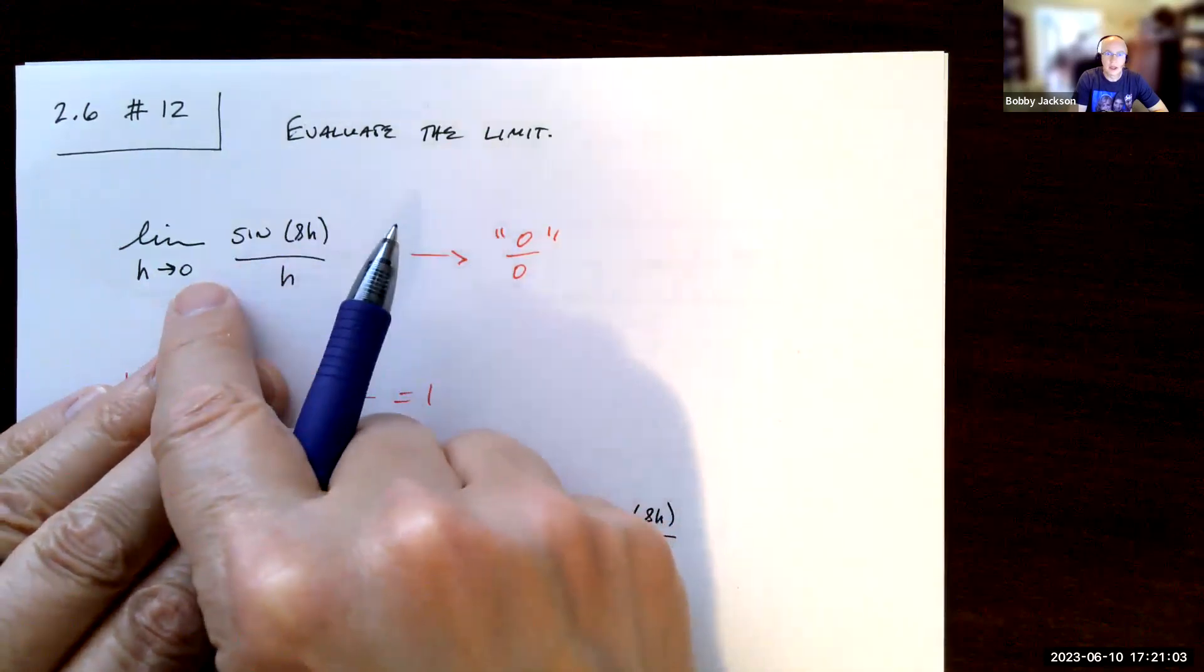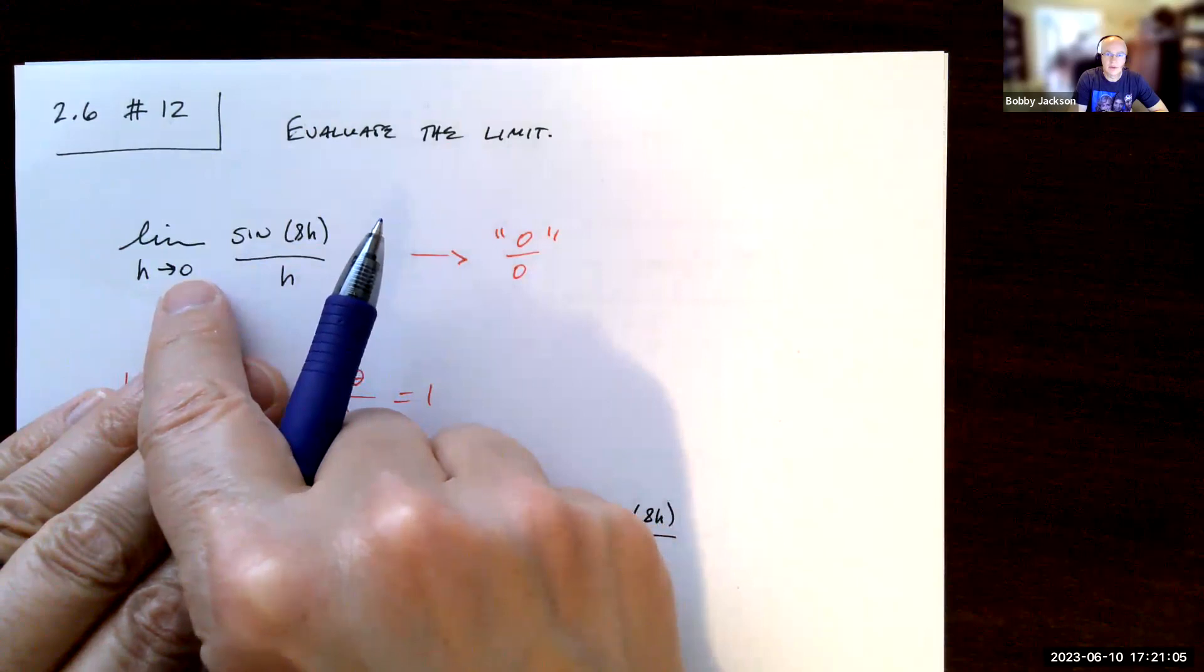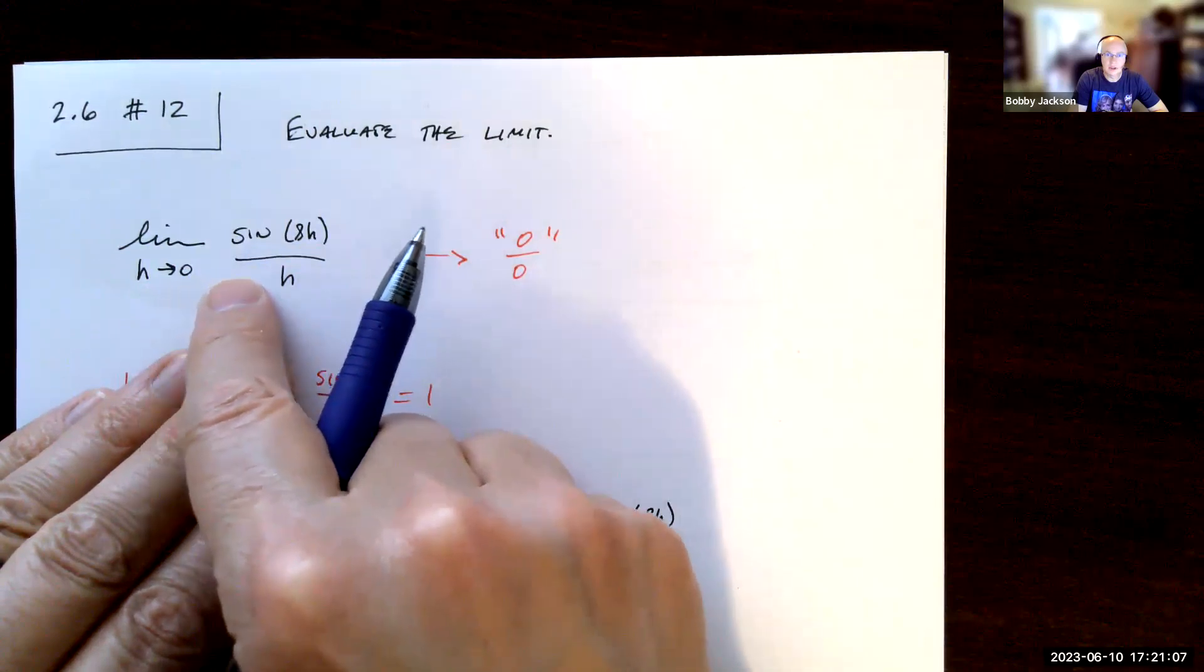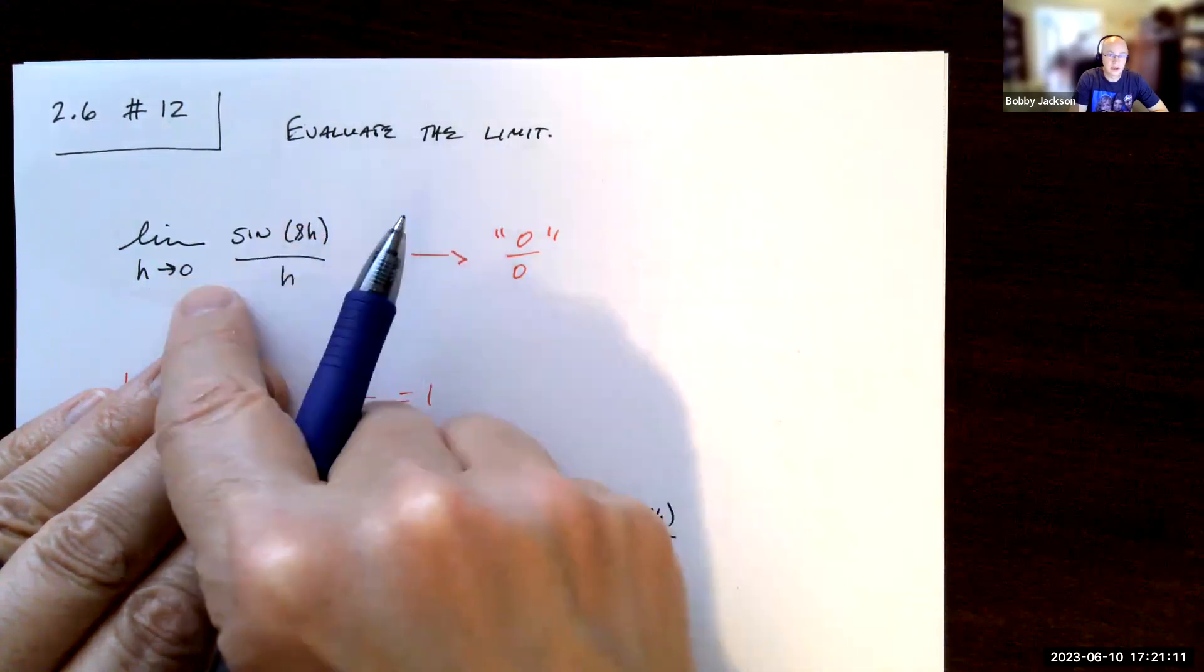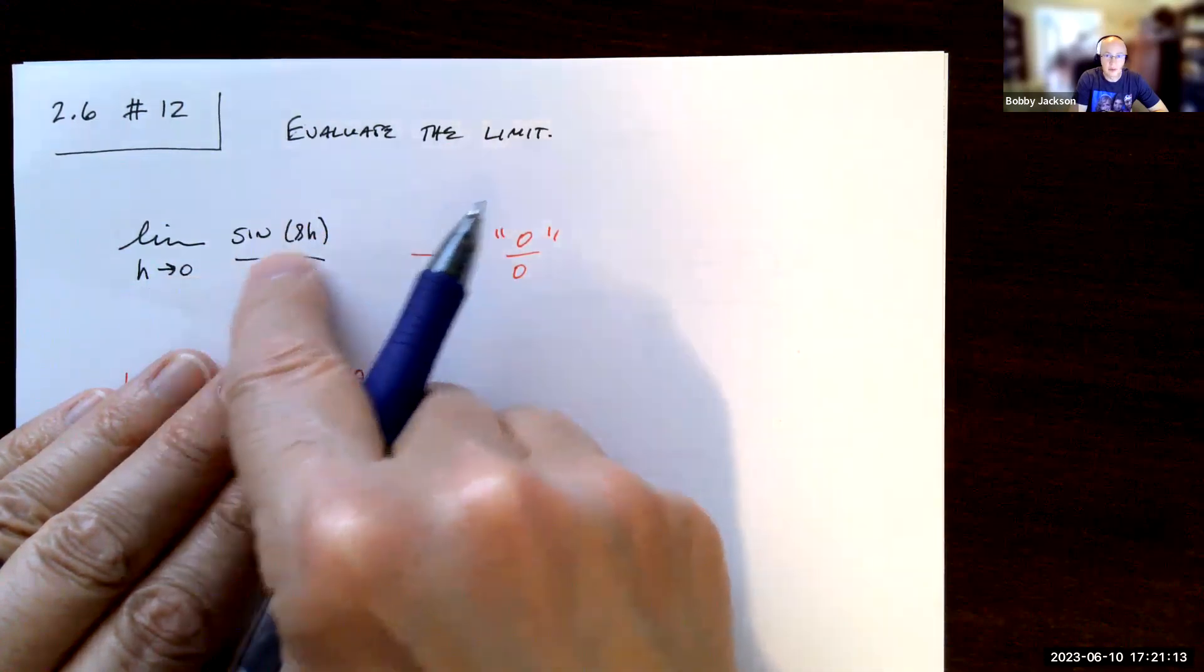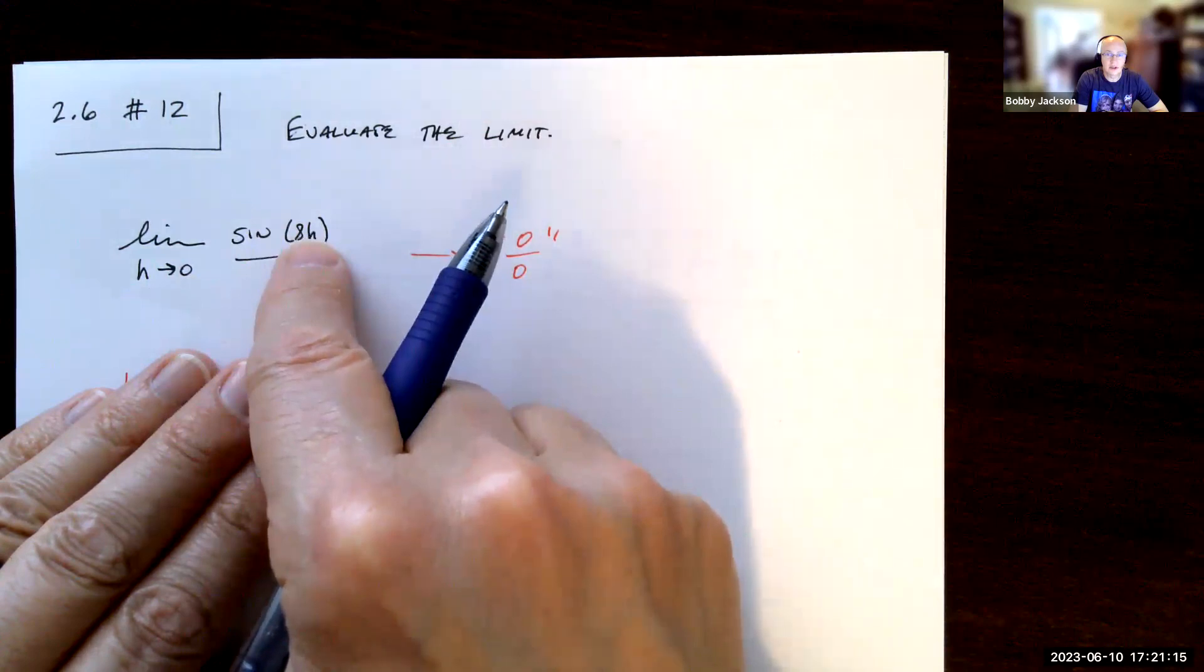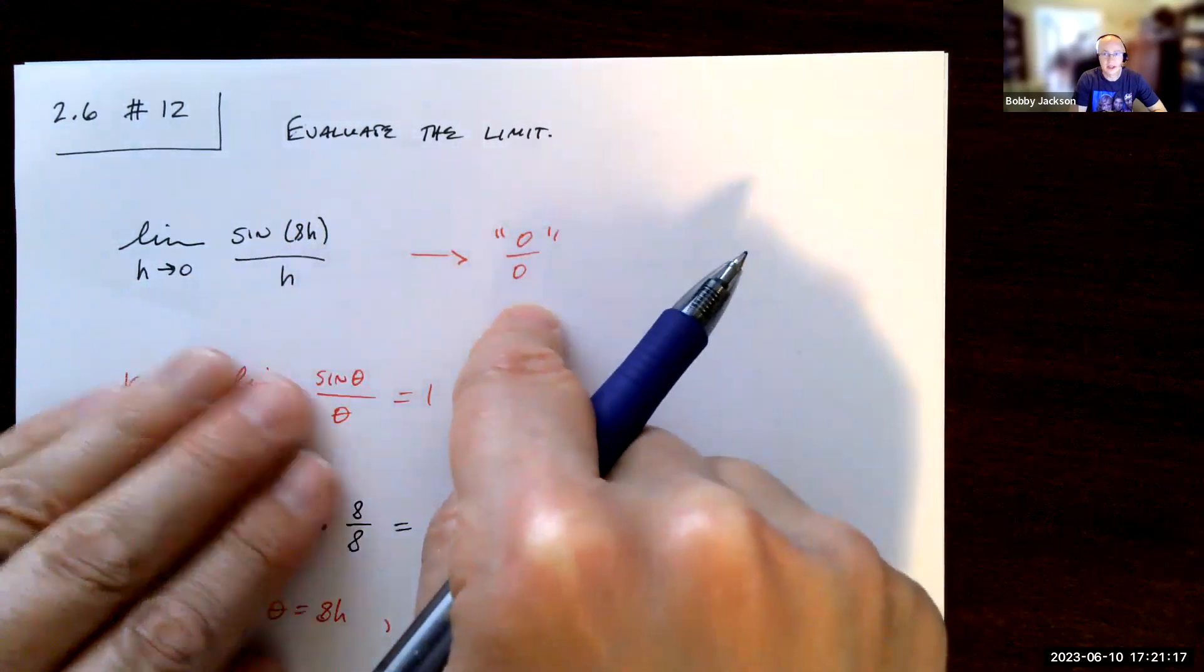Okay, well again for any function, if I'm taking the limit as h approaches 0 and it's continuous at 0, then I can just plug in and evaluate it. Problem is if I plug in 0, I get sine of 0 which is 0 over 0. That's not a real number.